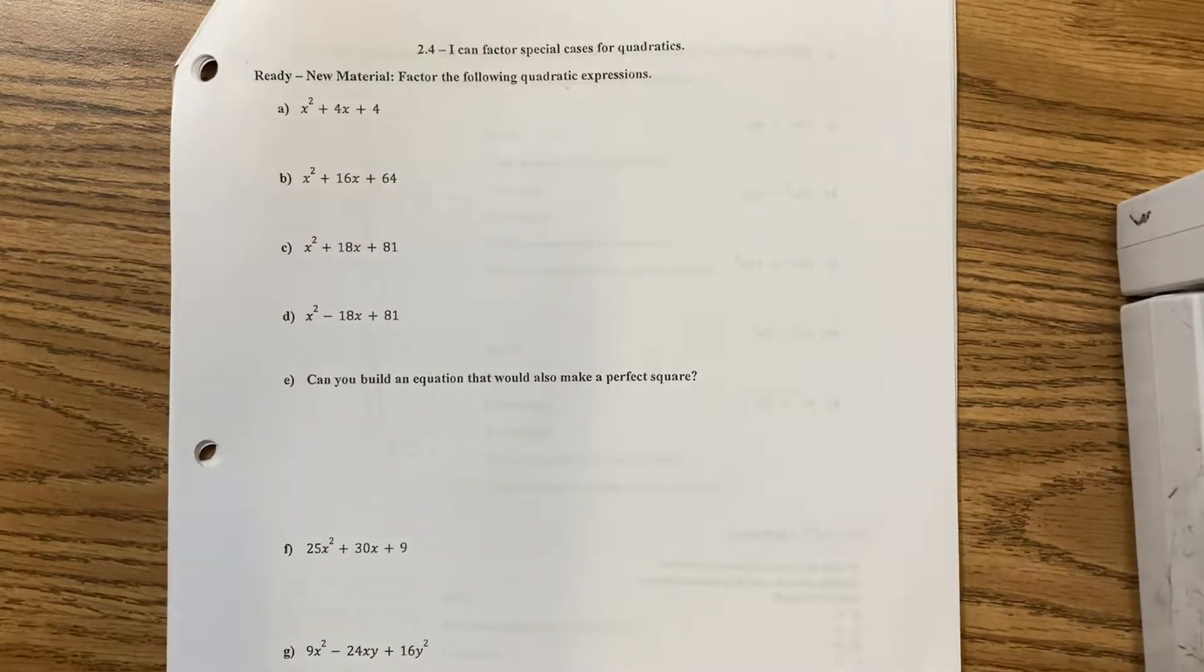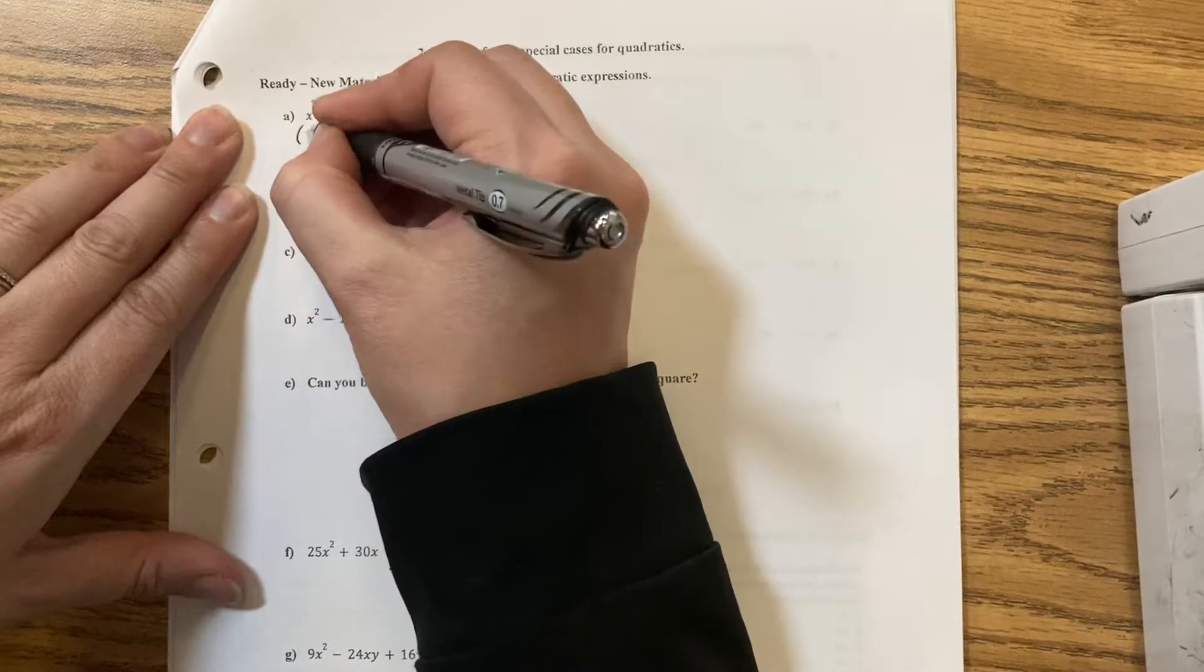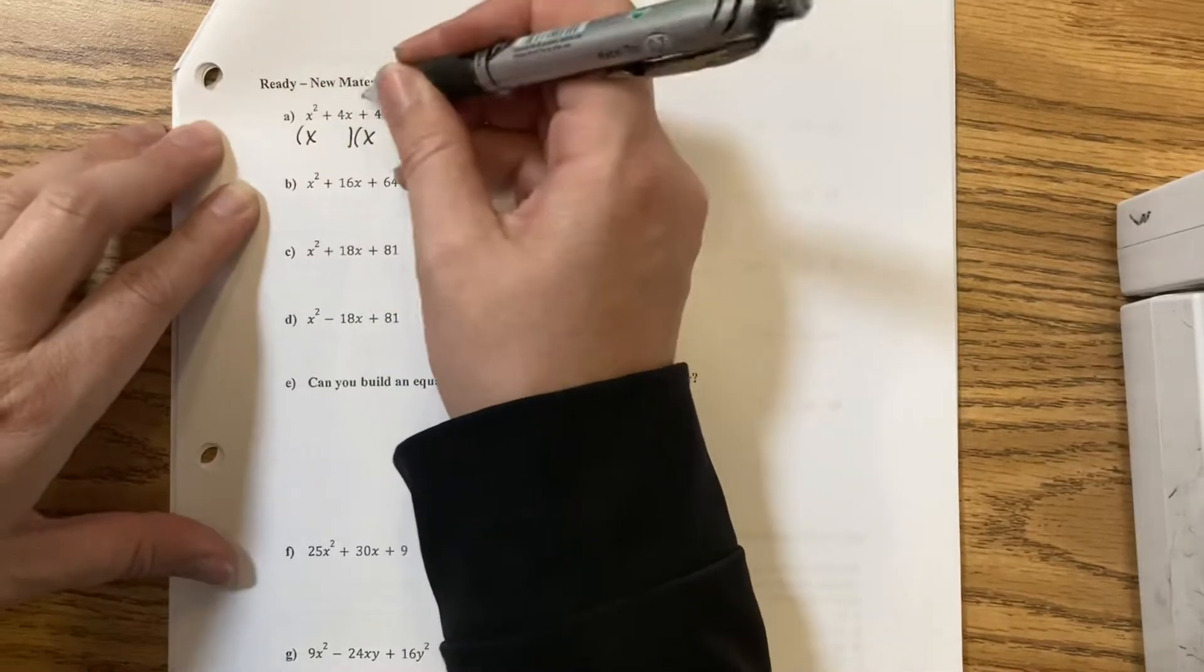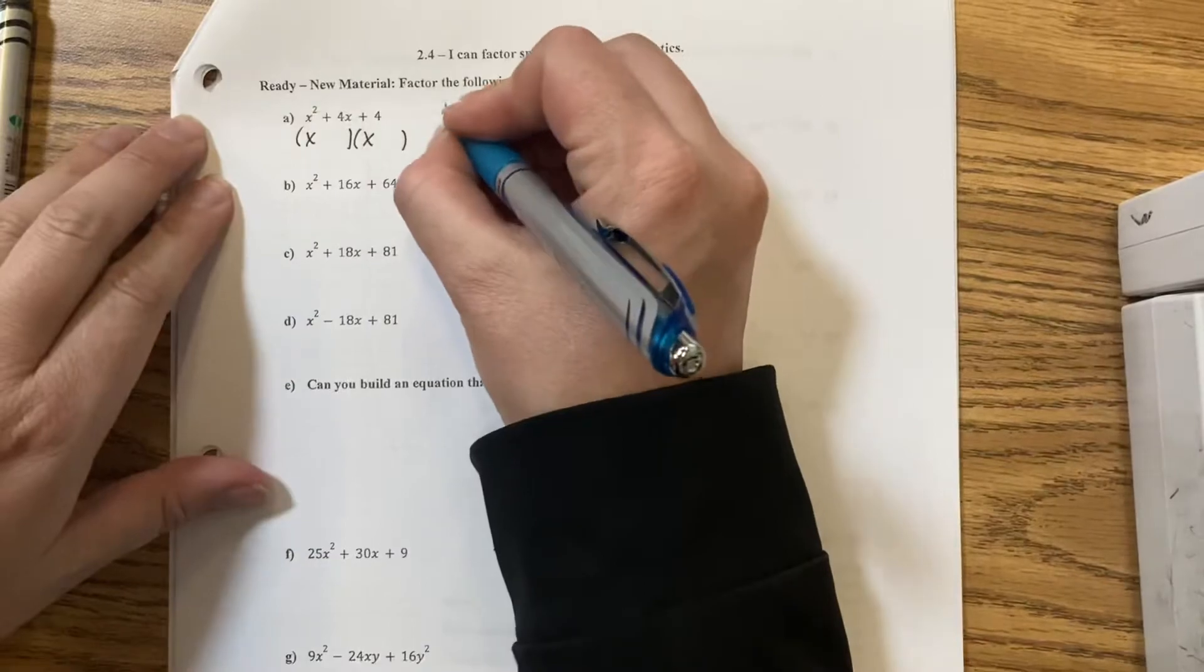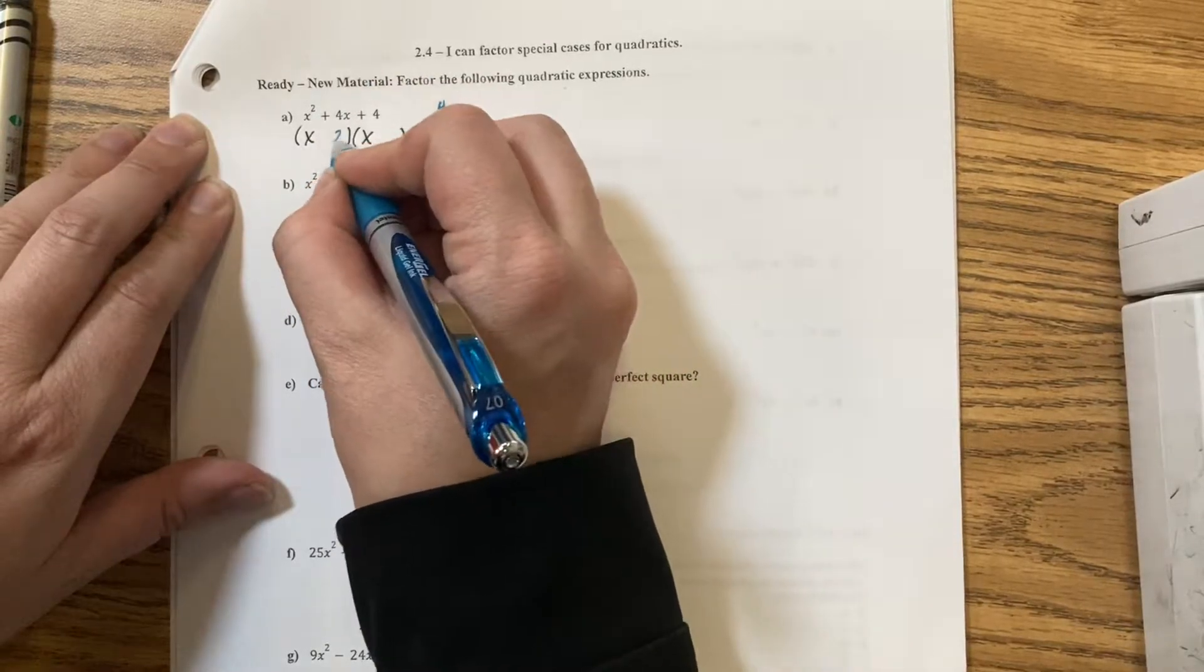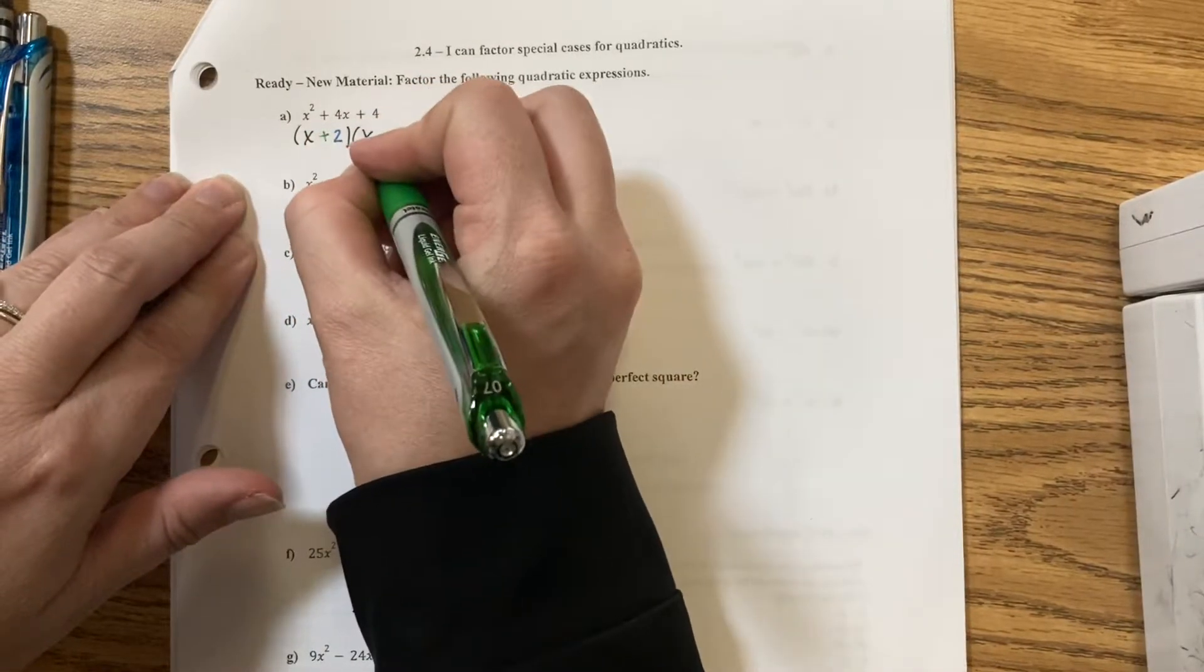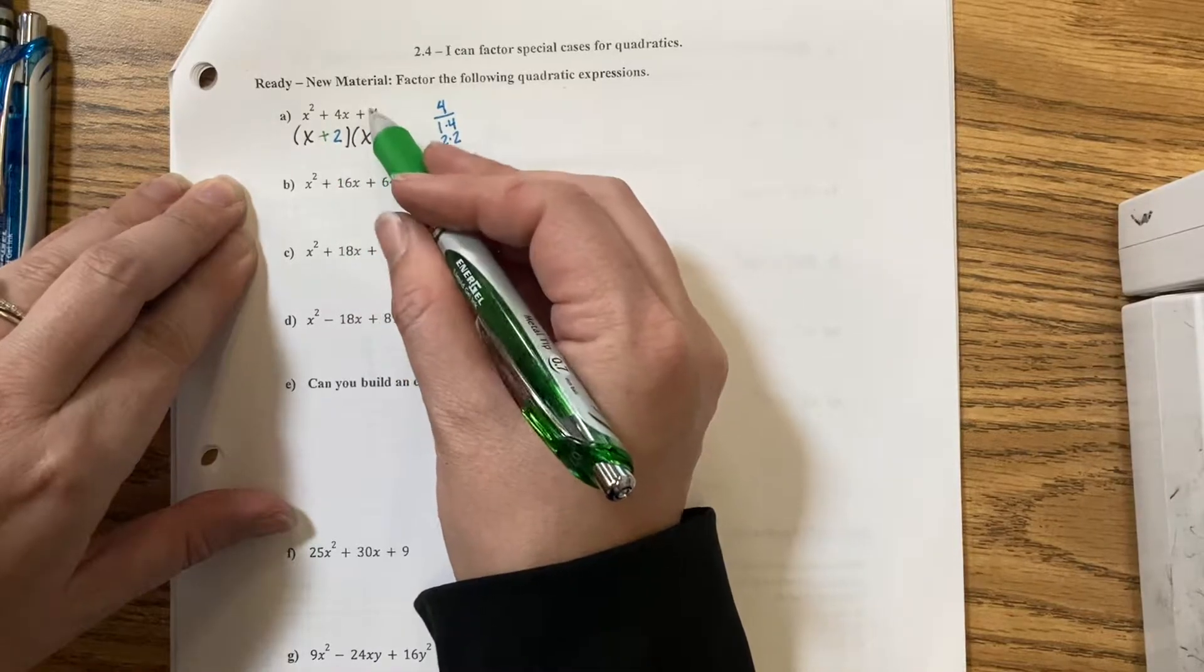Our first one, we have a 4 at the end of our factors. There's no value on the front, so I'm going to start by writing x times x is x squared. Multiples of 4 would be 1 times 4 or 2 times 2. To get a plus 4 in the middle, I would need to use both 2s, and my signs will be plus and plus. They add to 4, multiply to 4.